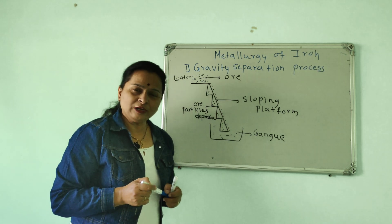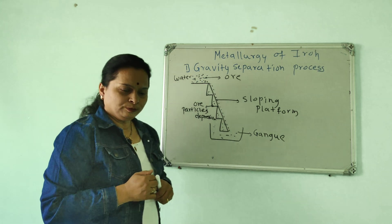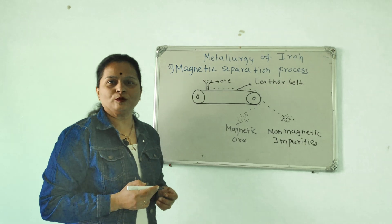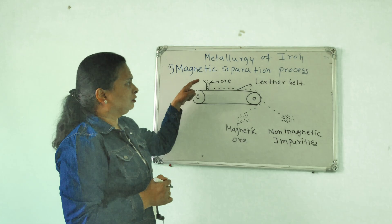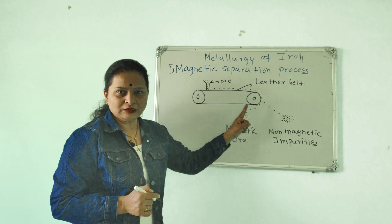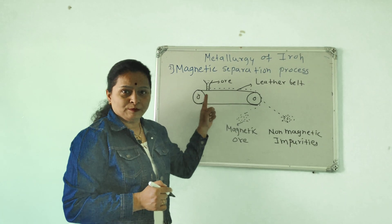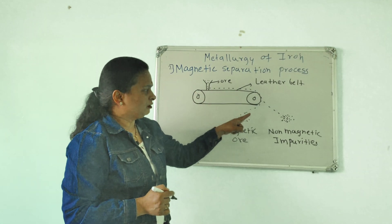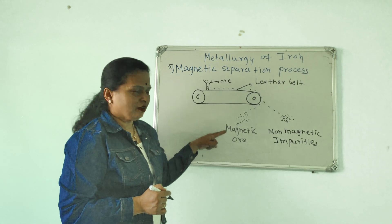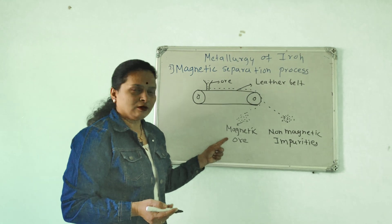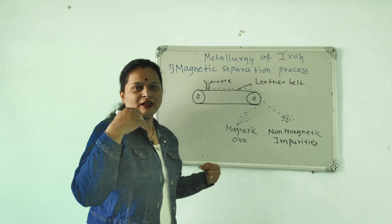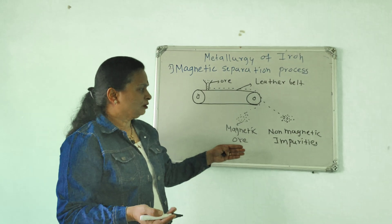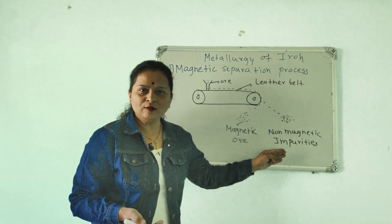The next process is magnetic separation. A leather belt is passed over an electromagnet. When a magnetic ore is passed over it, the magnetic ore is attracted and separated. Non-magnetic impurities fall separately, so the ore and impurities are separated.